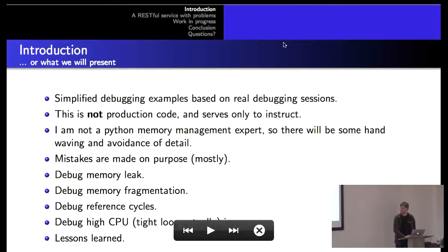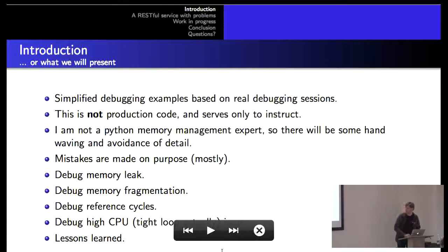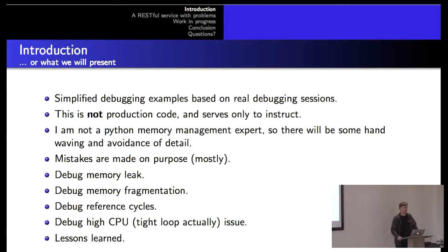So the plan is — and I think I might have to cut some of it due to time — but the plan was to debug a memory leak, tackle some fragmentation problems, deal with some reference cycle issues, and then high CPU. When we have a tight loop in Python, how do we find out what exactly is going on? Are there any techniques we can use to find out where we blocked? And then the takeaway lessons from this experience.